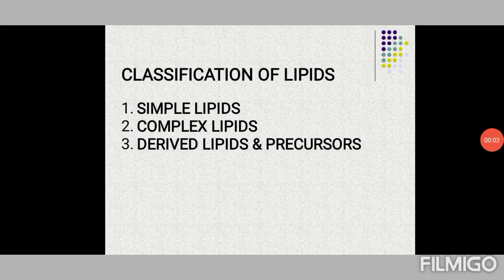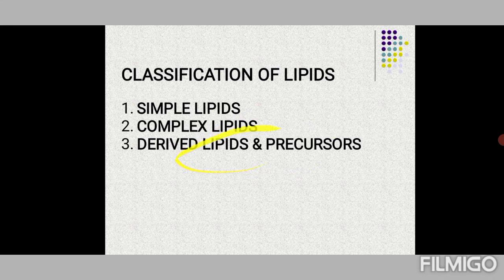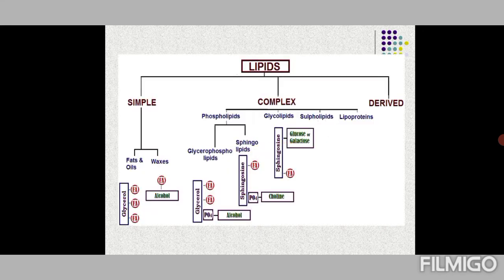Lipids are classified into three groups: simple lipids, complex lipids (sometimes referred to as conjugated lipids), and derived lipids. Derived lipids are actually a miscellaneous group.